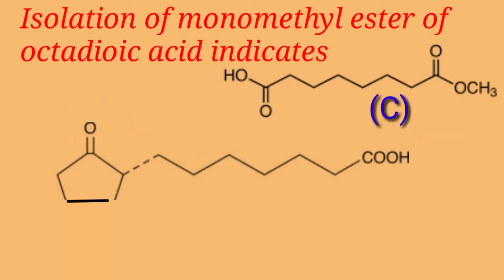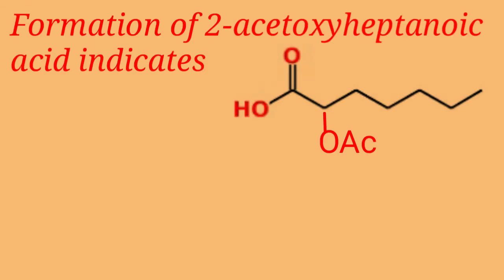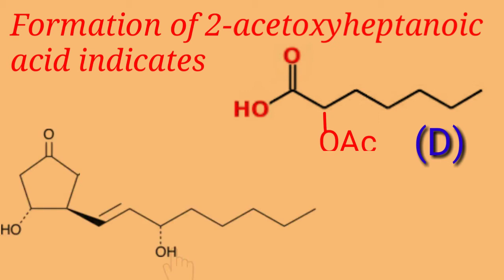Isolation of the monomethyl ester of octadioic acid indicates that the carboxyl side chain must be attached to the carbon atom adjacent to the carbonyl group. Formation of 2-acetoxyheptanoic acid indicates the presence of a hydroxyl group in the side chain of PGE1.